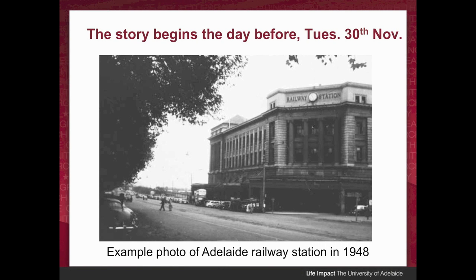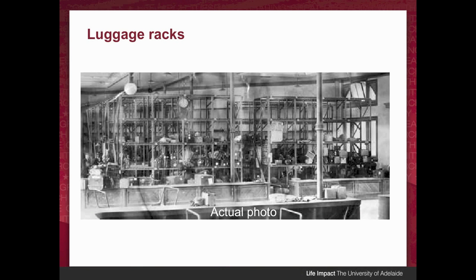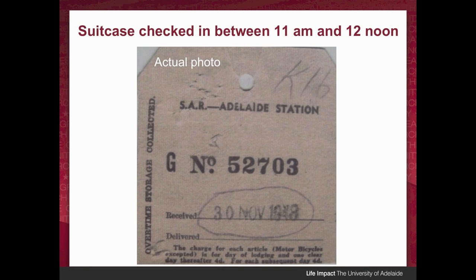To this day we don't know who he is. But the story begins the day before because, due to facts I will reveal later, we know that he was in the Adelaide railway station the day before. We know that whilst he was in the station, he checked in a suitcase in the cloakroom. This is an actual photo of what the cloakroom shelves looked like, where his bag would have been stored. The tag found on the man's suitcase is timestamped 30th of November — the night before he died. The K-16 in the top corner is presumably the shelf location number.